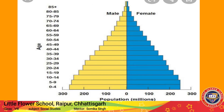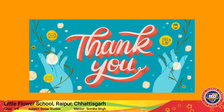यहाँ पर यह भी explain किया जा रहा है कि male कितने हैं, female population कितनी है, millions में, और किस age में कितना है — इस pyramid के through यहाँ भी explain किया जा रहा है। I hope students you have understood this chapter. Thank you.